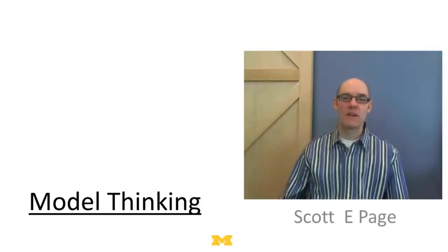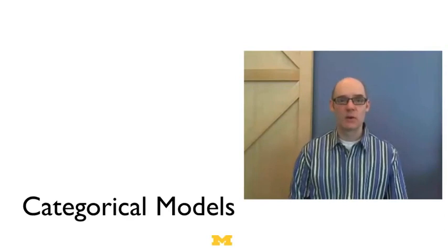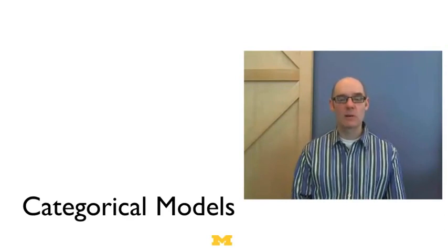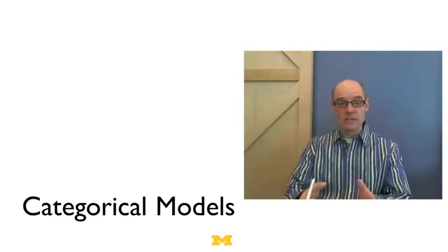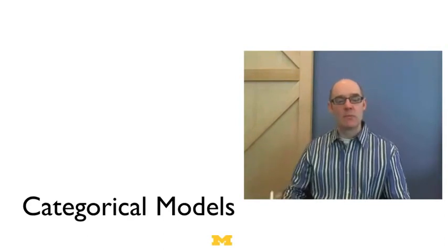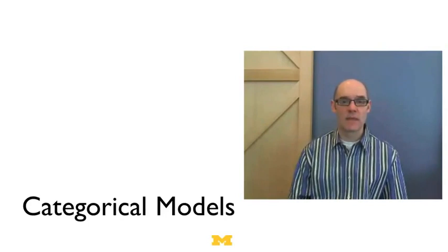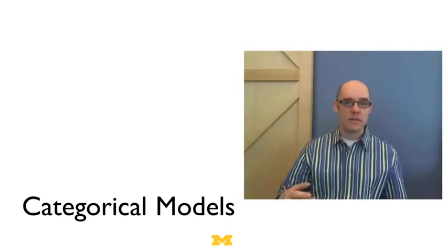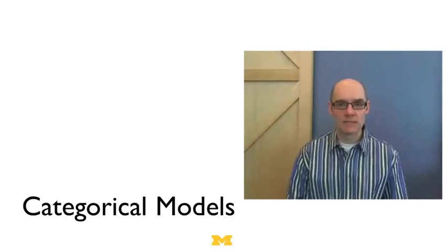Hi. In this lecture, we're going to talk about a very simple class of models that helps us make sense of data, and these are known as categorical models. In a categorical model, what you do is you basically bin reality into different categories, and then you hope that these categories help you make better sense of the data, that they explain some of the variation in the data. I want to start out by just describing what a categorical model's like, and then we'll talk about how they can help us make sense of data.